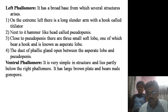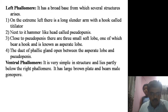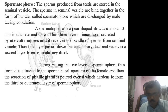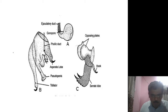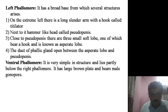The second part is the left phallomere. It has a broad base from which several structures arise. On the extreme left there is a long slender arm with a hook called the titillator. Next to that is a hammer-like head called the pseudopennis. Close to the pseudopennis there is a small soft cloak which bears a hook and is known as the asperate lobe. In figure B, from extreme left: the titillator, then the hammer-shaped pseudopennis, then the asperate lobe.